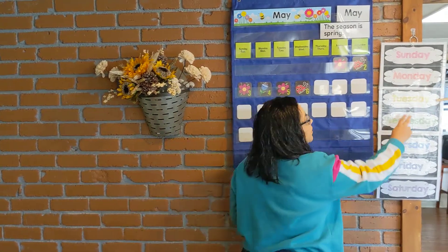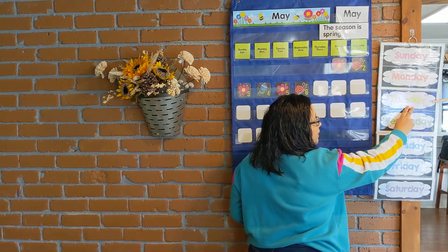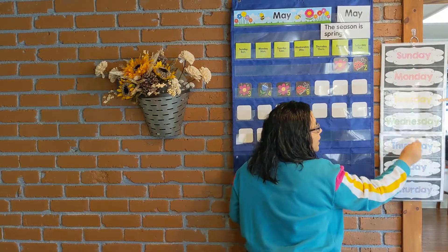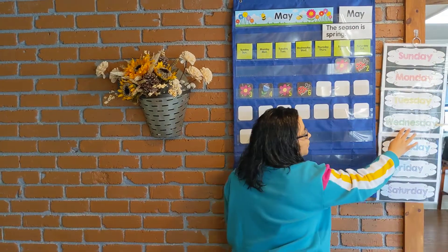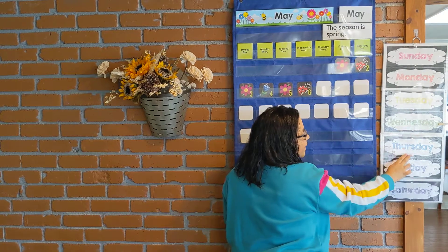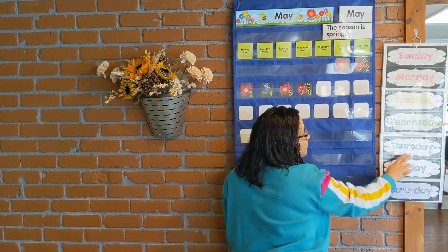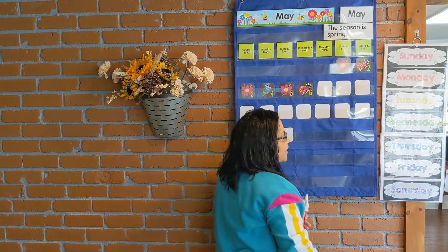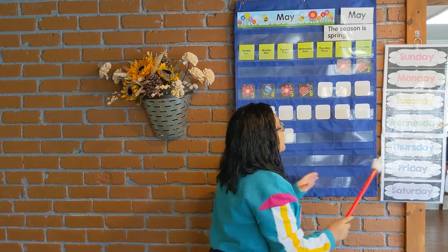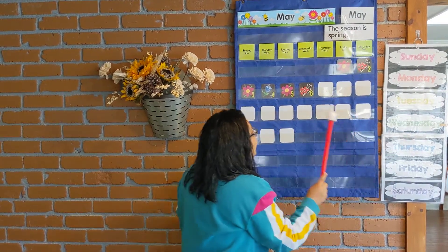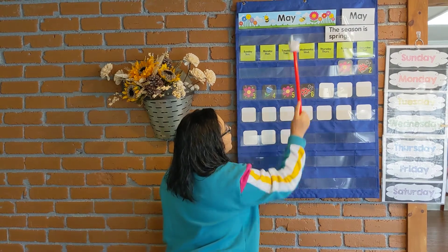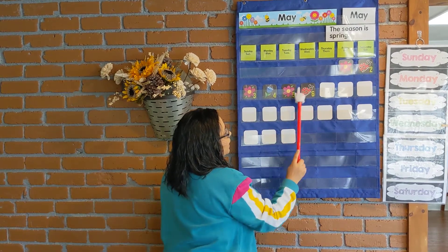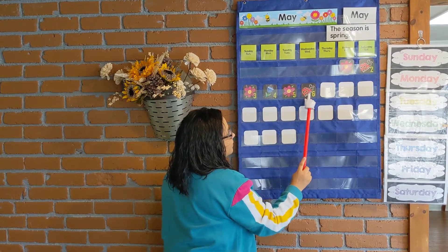Yesterday was Tuesday, so today is Wednesday. And if today is Wednesday, then tomorrow will be Thursday. So it's Wednesday, the 6th of May, and it's a ladybug day.